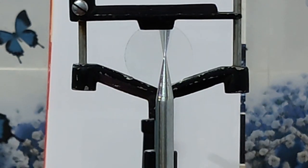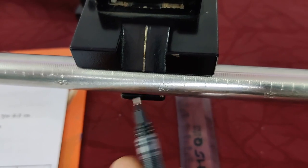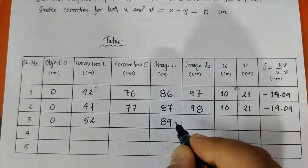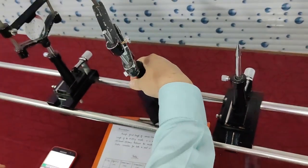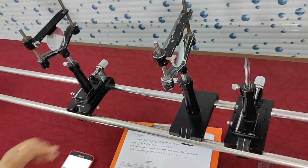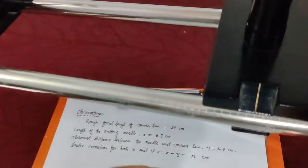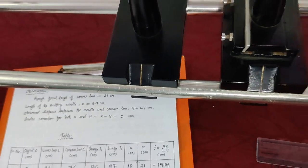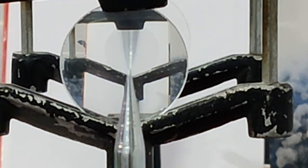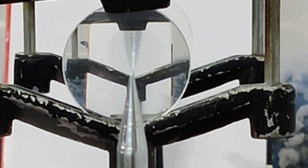Now let's take the third observation. The convex lens image is at 89 cm, and the concave lens is placed at 79 cm — a gap of 10 cm. We find the final image. The convex lens is placed at 62 cm, the concave lens at 85 cm, and the final image is found at 106 cm.